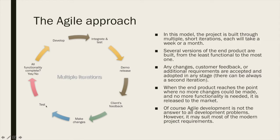They make those changes, they test, and then they come to the final stage of the iteration: is all the functionality complete? Is this a fully functional product, or do we need to make more changes? If yes, it is released to the client or to the market. If not, the iteration starts all over again — developing, integrating, and testing, then another demo release and another feedback, then another set of changes, then testing again. A product may take multiple iterations until it reaches the final stage where it can be deployed or delivered to the client or released to the market.